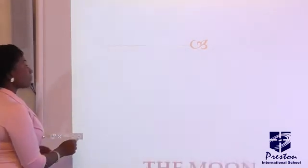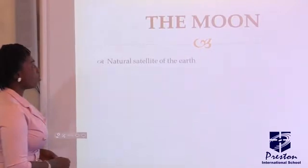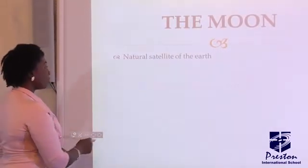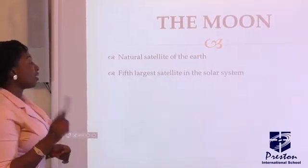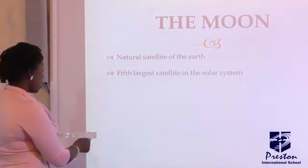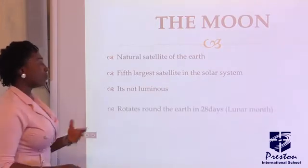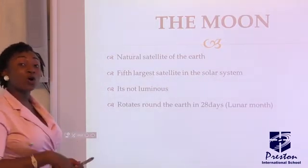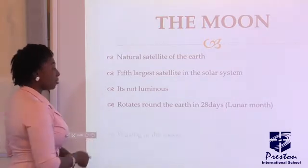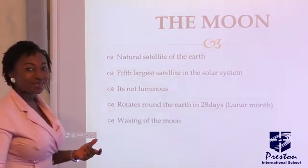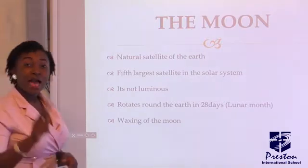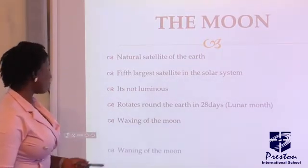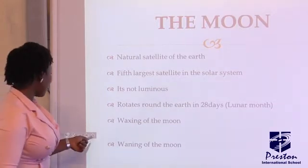Now let's talk about the moon before we wrap up for today. The natural satellite of the earth is known as the moon, and it is also the fifth largest satellite in the solar system. The moon is not luminous but reflects light from the sun. It rotates around the earth in about 27 to 28 days — we go with 28 days — and this period is known as the lunar month.